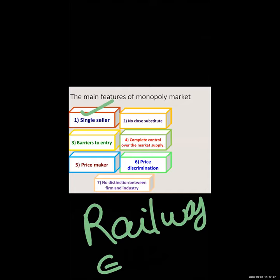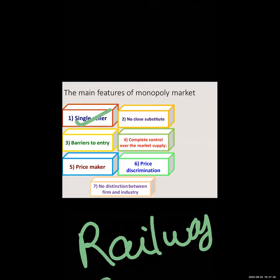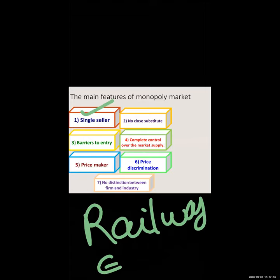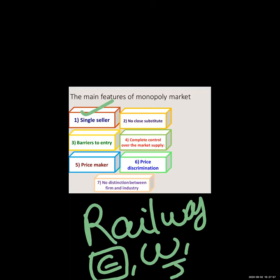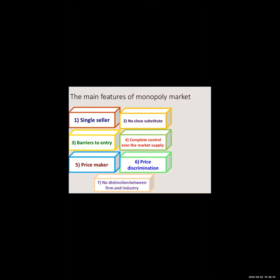Examples of single seller include railway, electricity supply in my area from the government — Maha Vitaran. Water supply is also a good example. In Bombay we have Reliance, government, and Tata for electricity. Judicial services — courts, the law department — are also examples. Whenever a service or product is provided by a single seller, we identify it as a monopoly market.